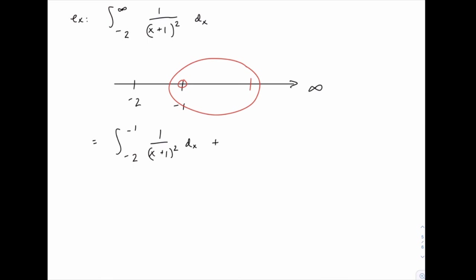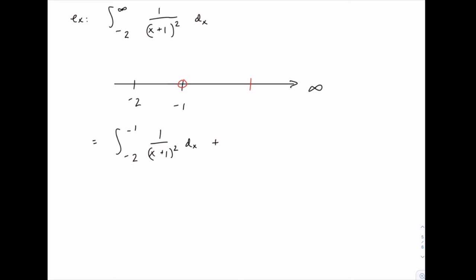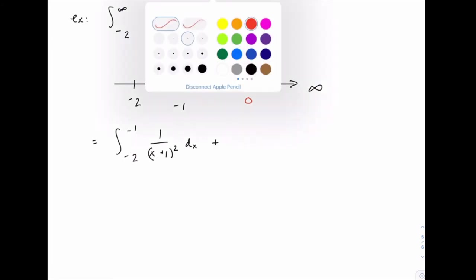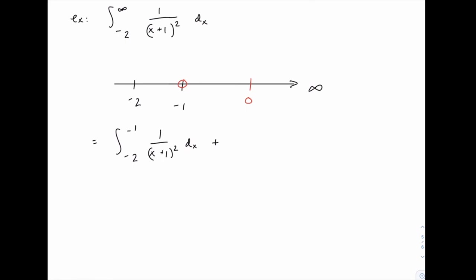We need to split somewhere between negative 1 and infinity, picking a point so that the upper limit of one integral and the lower bound of the next are non-problematic — values we can simply plug in without needing a limit. We can only apply one limit to an integral at a time. I'll pick 0 somewhat arbitrarily — you could use 1, 10, 100, or anything in that range, and it will subtract and cancel between the two integrals. So we'll have a second integral from negative 1 to 0, and a third integral from 0 to infinity.